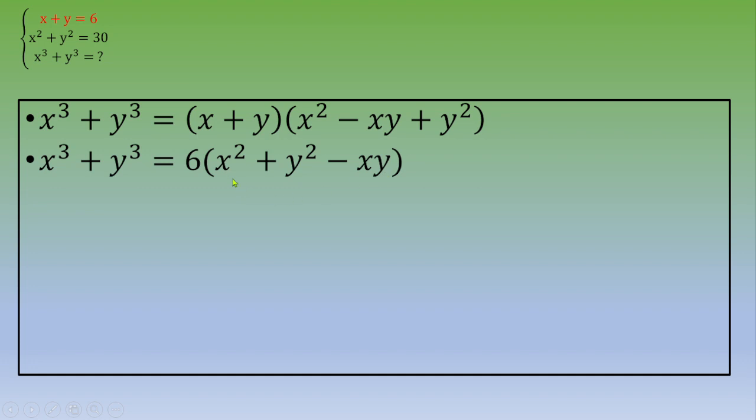The value of x squared plus y squared, this is also given, this is 30. So you end up with x cubed plus y cubed equals 6 times 30 minus xy.